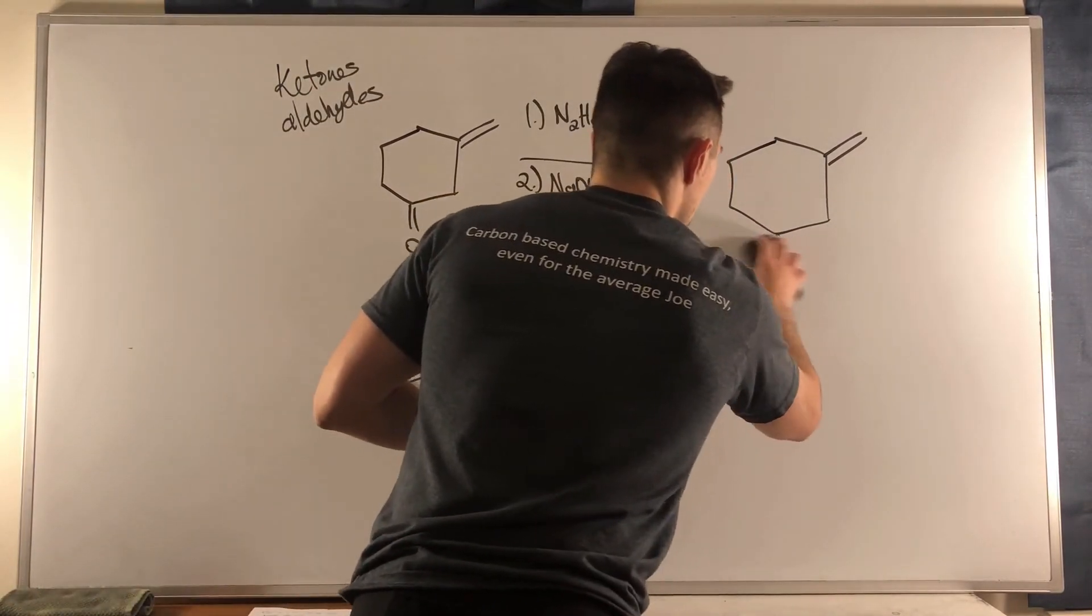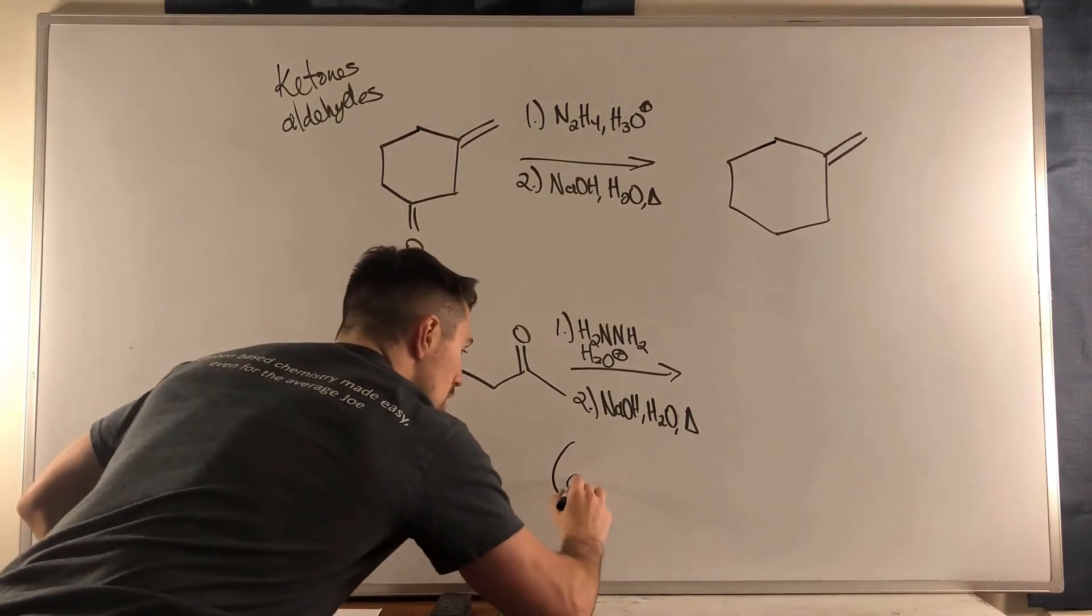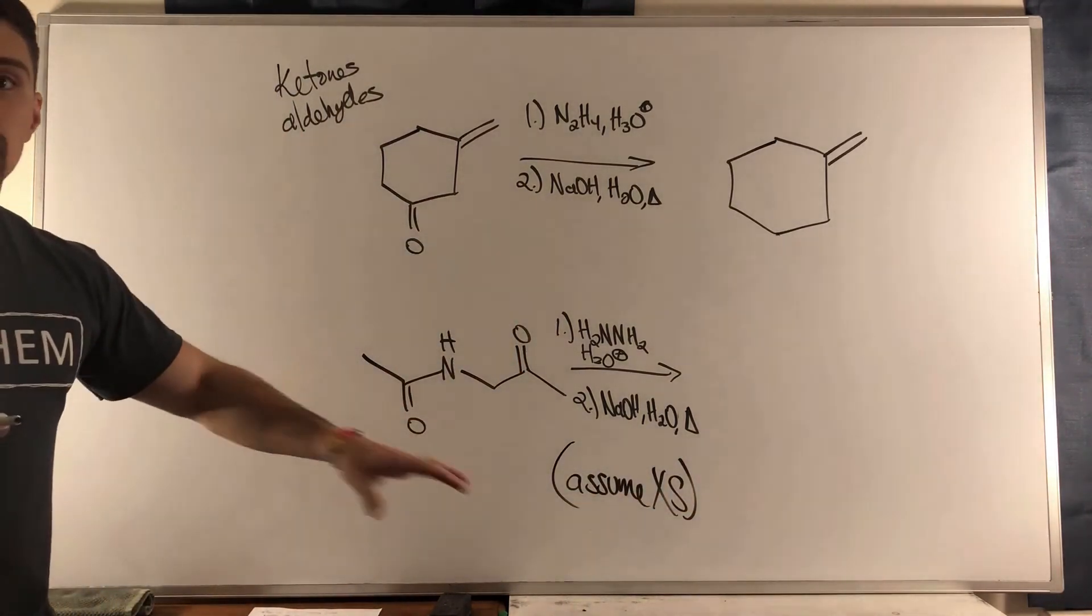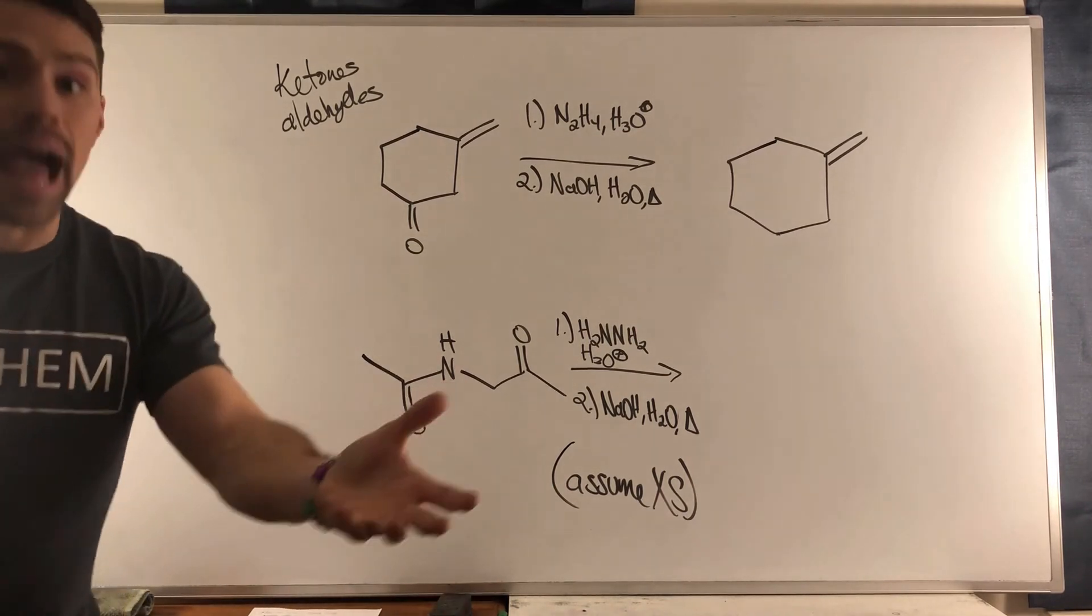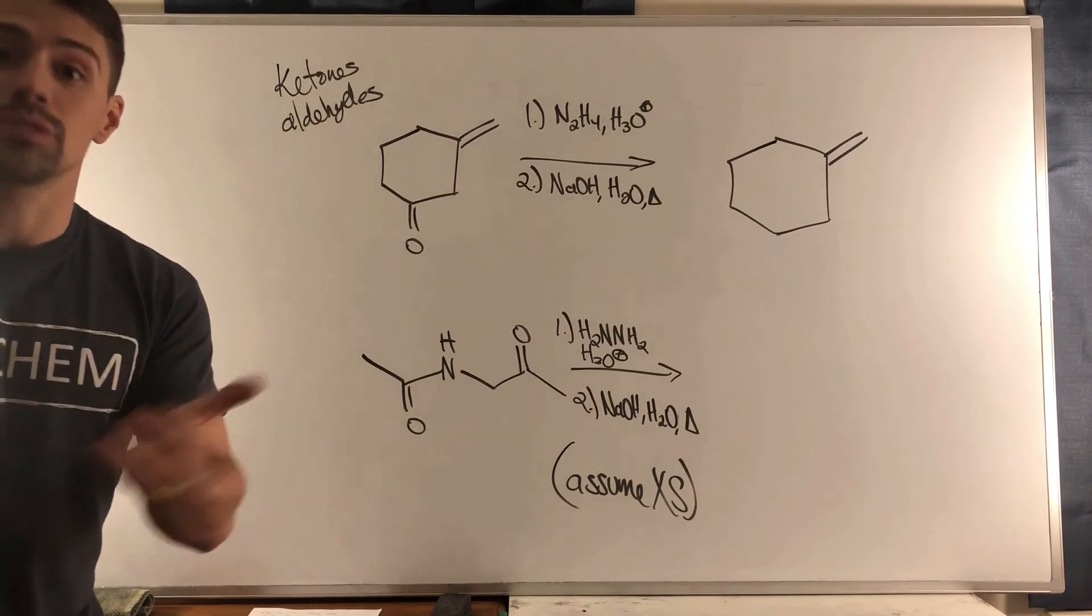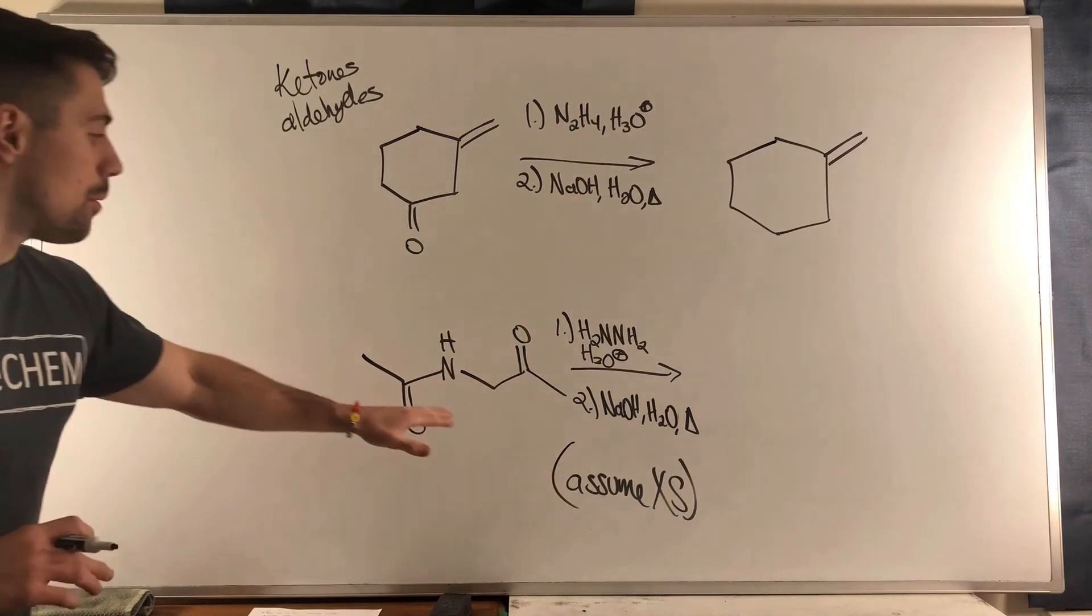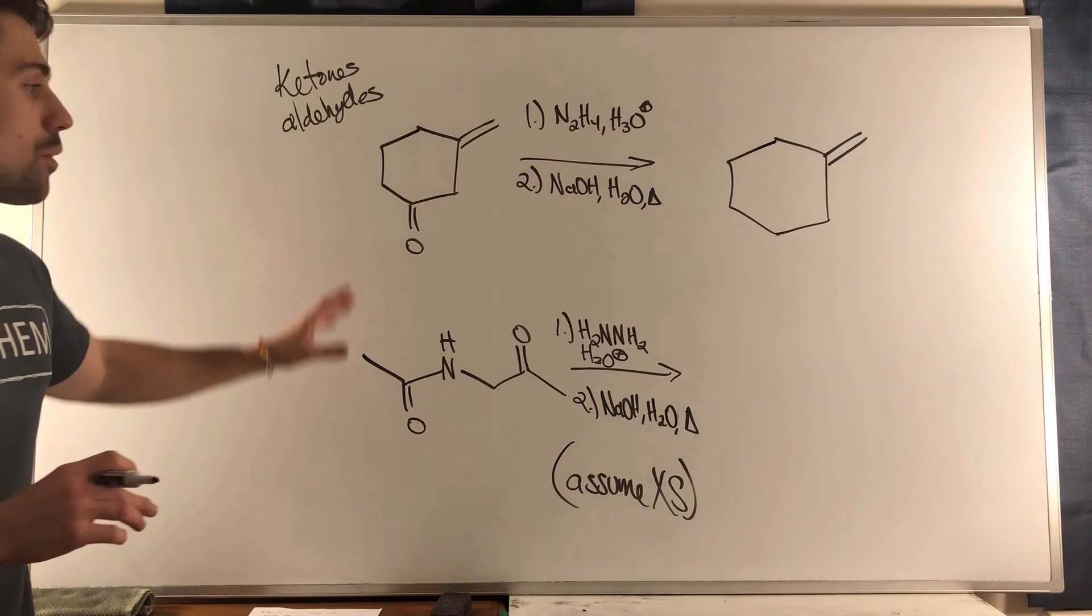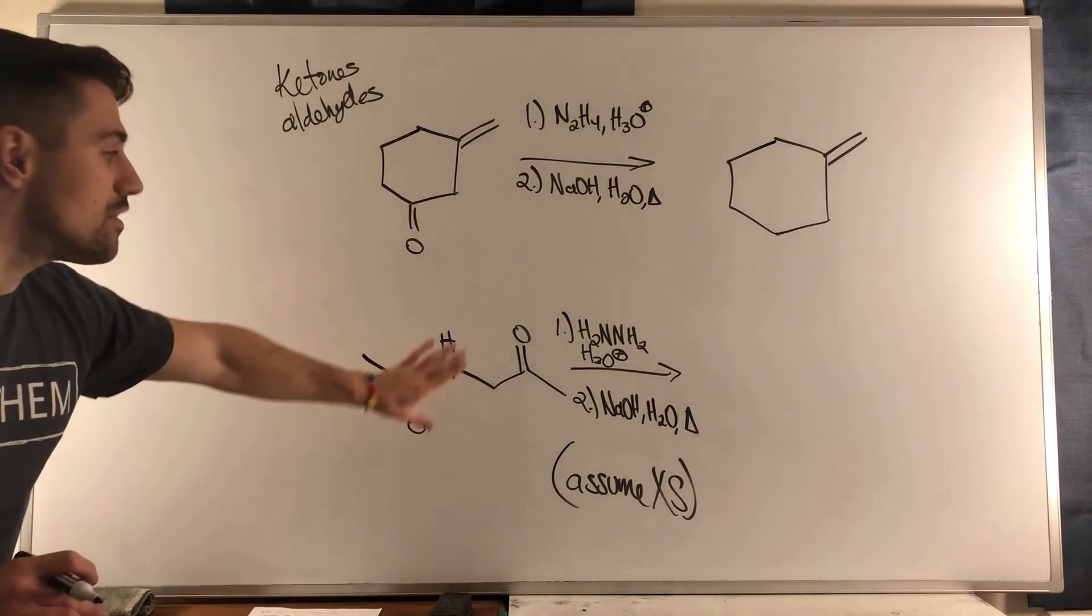Okay now down here, assume excess, but what I wanted to highlight down here is carbonyl functional groups that are less reactive than aldehydes and ketones, or not aldehydes and ketones, they are not subjected to Wolff-Kishner reductions. So right here you see we have a ketone but we also have an amide. Amides are not as reactive as ketones and aldehydes so the Wolff-Kishner is only going to operate on this carbonyl functional group and leave this unchanged.